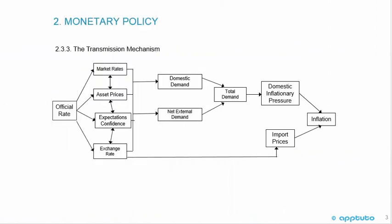Now we're going to look at the graphic for the transmission mechanism — the process whereby a central bank's interest rate gets transmitted through the economy and ultimately affects the rate of increase of prices, that is inflation.